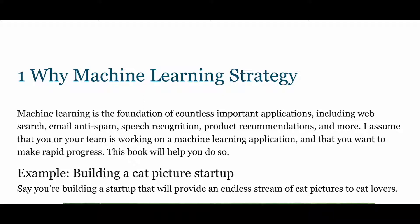Andrew says machine learning is the foundation of countless important applications including web search, email anti-spam, speech recognition — like Alexa or Hey Google — product recommendations, like when you buy something on Amazon and it recommends products based on what you bought. Another example would be advertising: Google and Facebook use artificial intelligence to recommend advertisements based on your interests, your search history, and what you've been clicking on.